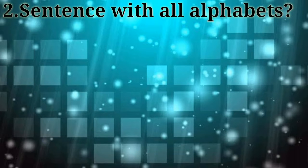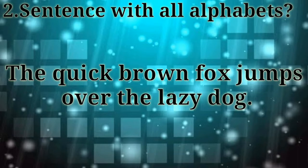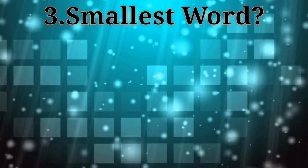Do you know which is the sentence with all the alphabets? The answer is the quick brown fox jumps over the lazy dog.